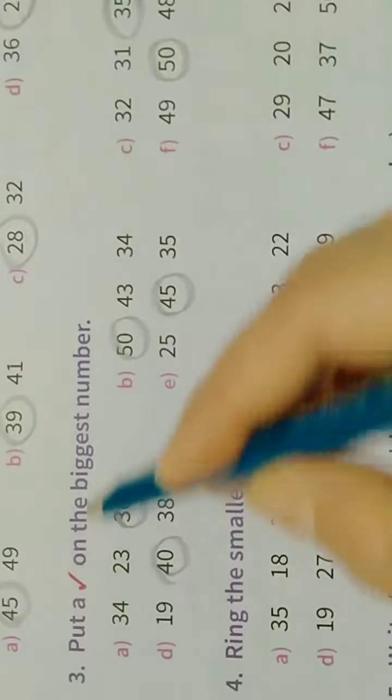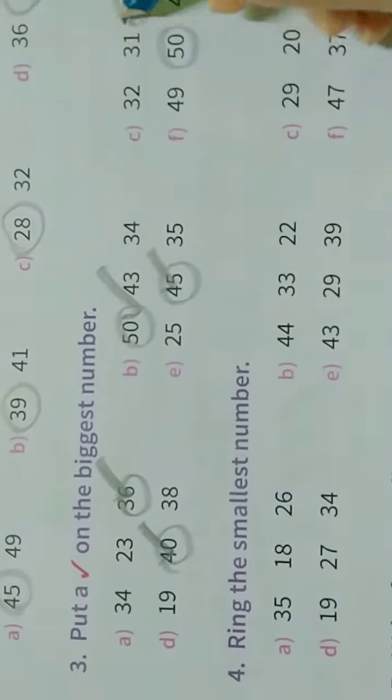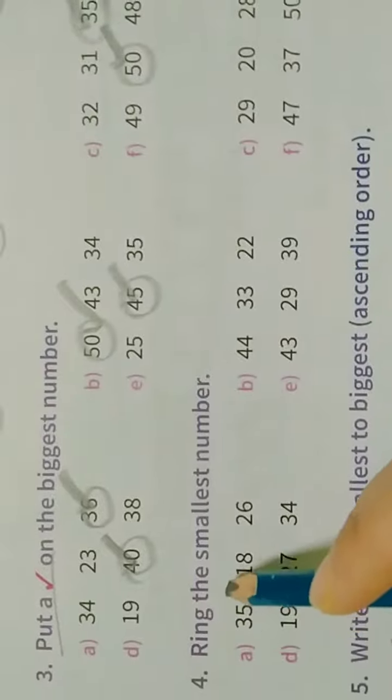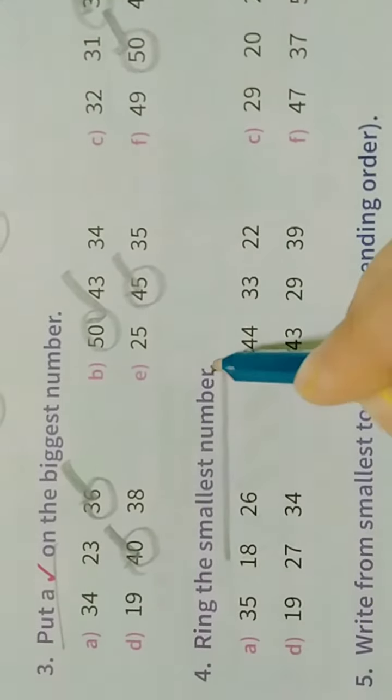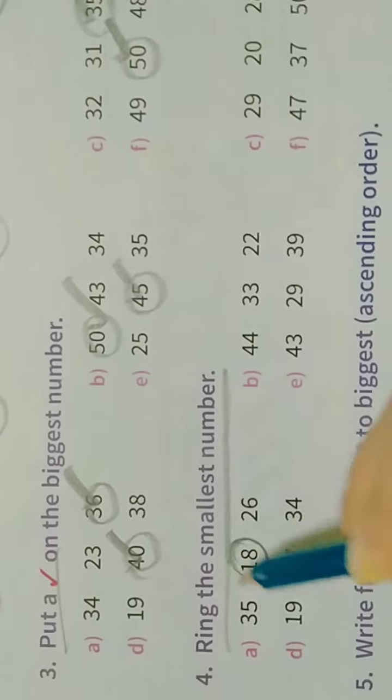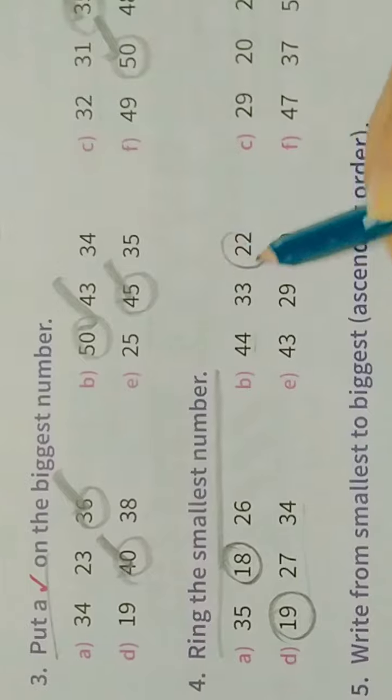Circle the numbers, not tick. That's it for this question. Now answer should come. Ring code the smallest number. In code, circle the smallest number, the smallest.